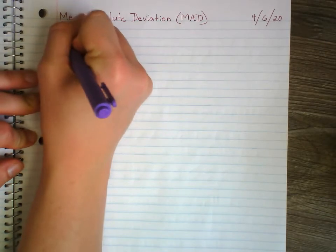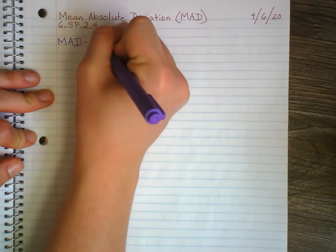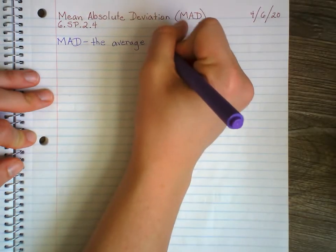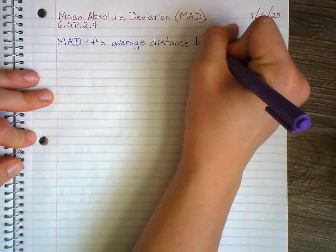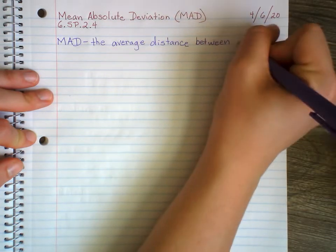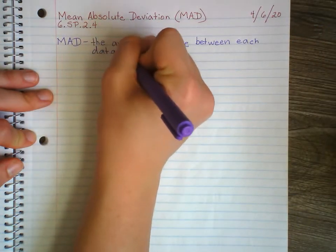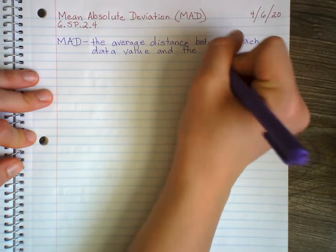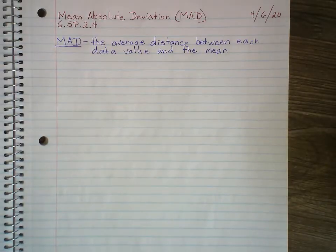So let's write down MAD — mean absolute deviation. The formal definition is: the average distance between each data value and the mean. MAD is the average distance between each data value and the mean.